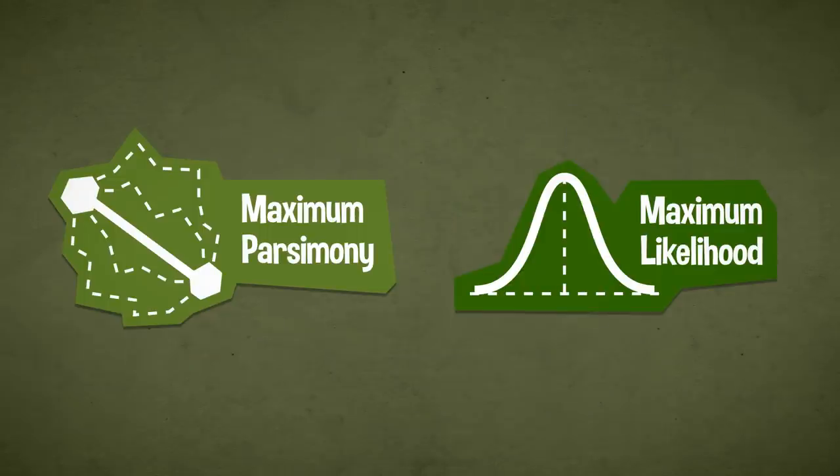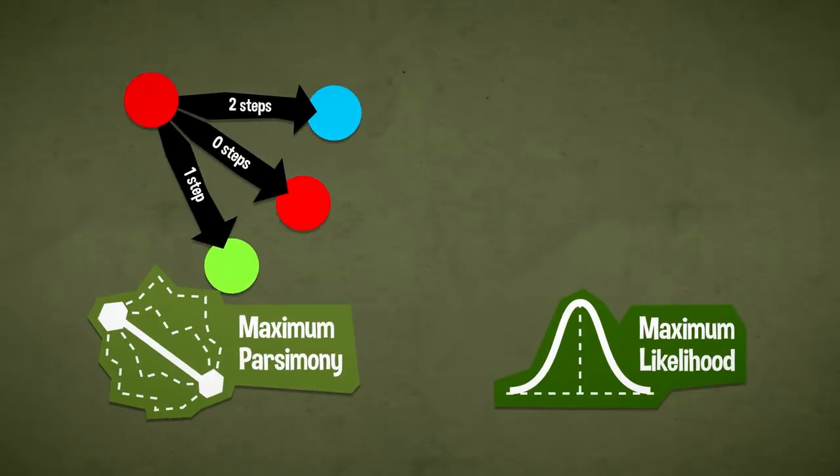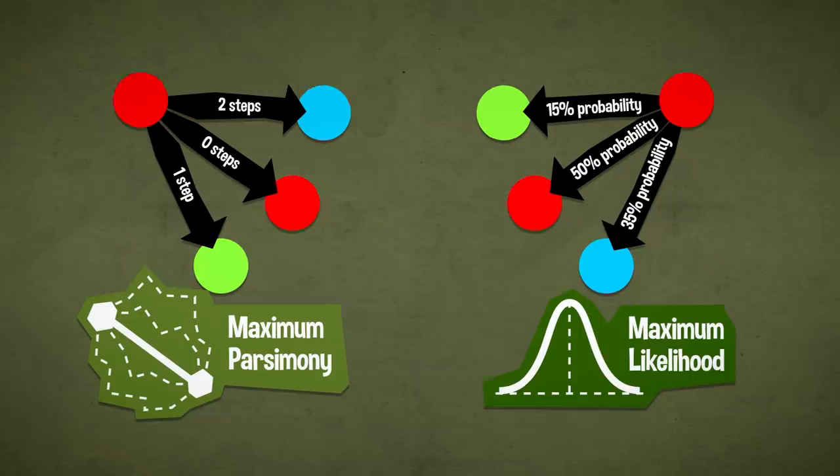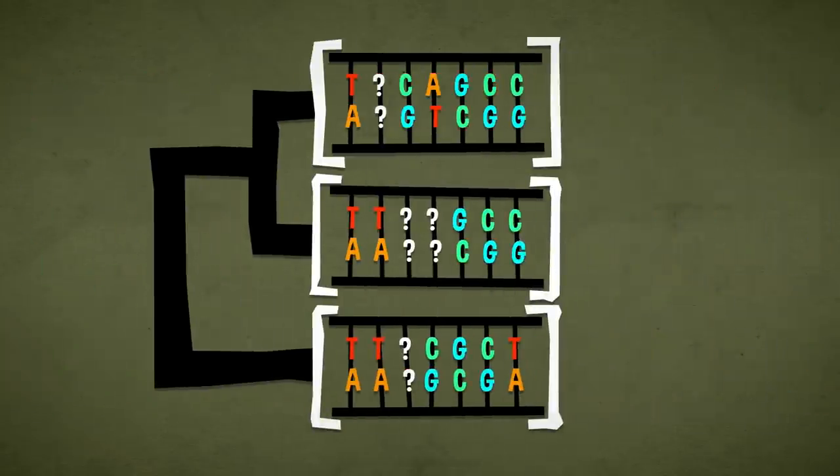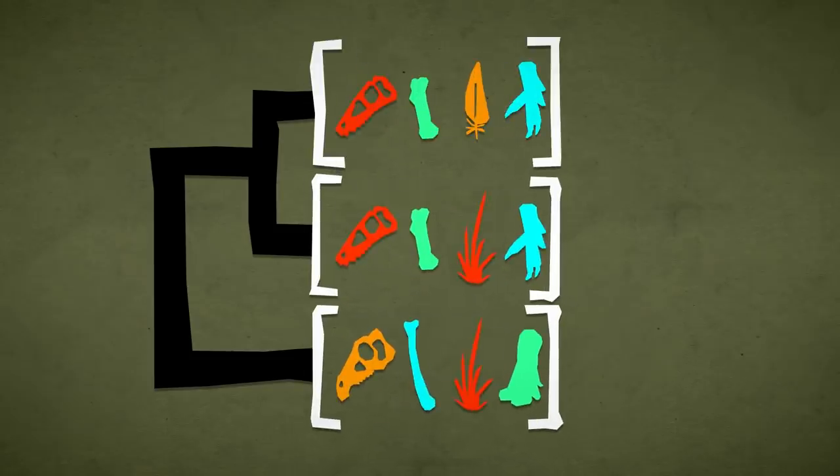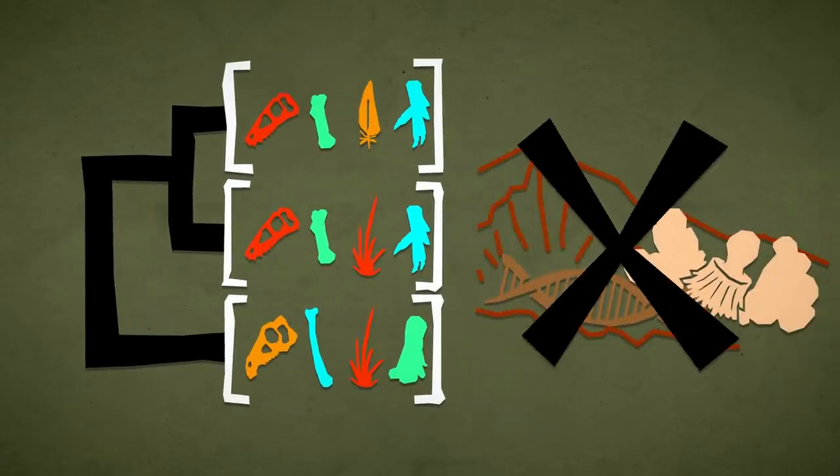We can use maximum likelihood rather than maximum parsimony to select our optimal trees. Instead of counting steps between taxa, we calculate the probability of evolving between them. This is a method from molecular phylogenetics, where the character matrices are the DNA sequences of the taxa. Workers have been applying the model to morphological phylogenetics as well. That's the only data paleontologists can use since DNA doesn't fossilize.